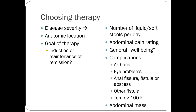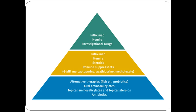When choosing therapy, you look at disease severity, anatomic location, and your goal — are you trying to induce or maintain remission? Higher numbers of stools, more bleeding, and systemic complications all increase severity. Historically, Crohn's treatment has been a step-up approach: start at the bottom of the pyramid and work your way up to biologic medications like infliximab.